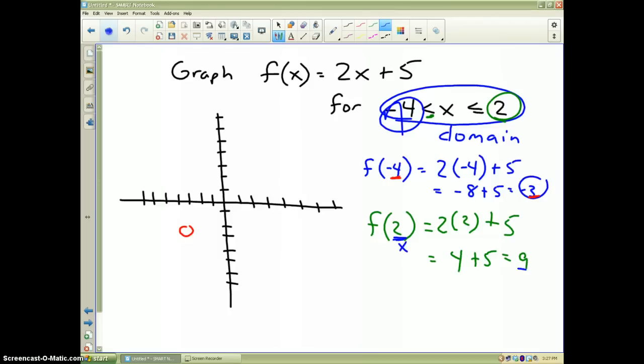x is 2, y is 9. So, I go over to 2, and I'm going to have to make my graph a little bit higher. 1, 2, 3, 4, 5, 6, 7. This would be 8. And that would be about where 9 is. So, I go over to 2 and up to 9. And since it's less than or equal to, I put a closed dot.